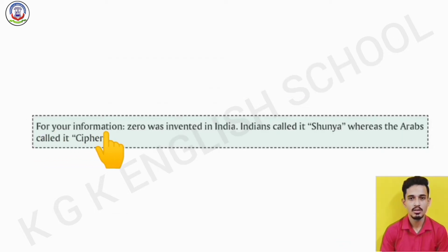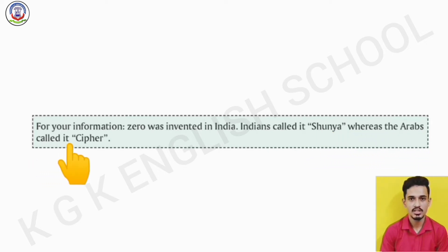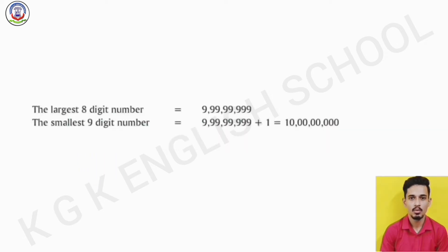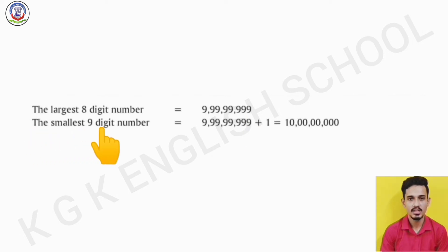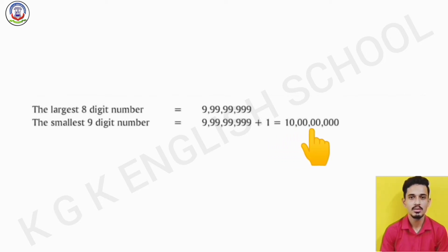For your information, 0 was invented in India. Indians called it Shunya, whereas the Arabs called it Cypher. As we discussed about greatest and smallest numbers in each number of digits, we know the largest 8-digit number, that is eight 9's, is called 9 crore 99,99,999. So the smallest 9-digit number is 9,99,99,999 plus 1, that is 10 crore.